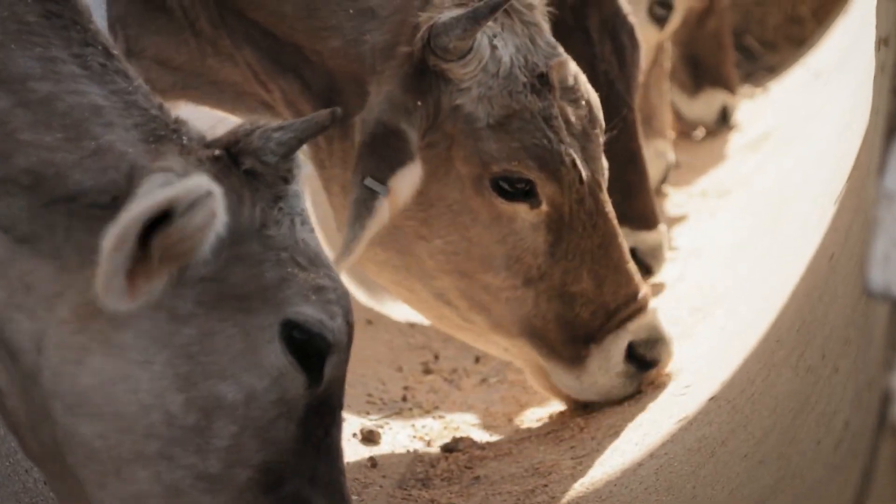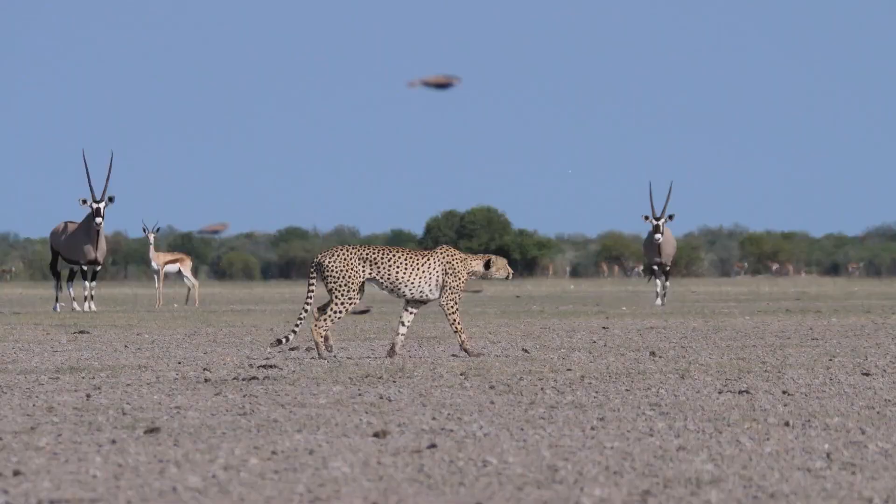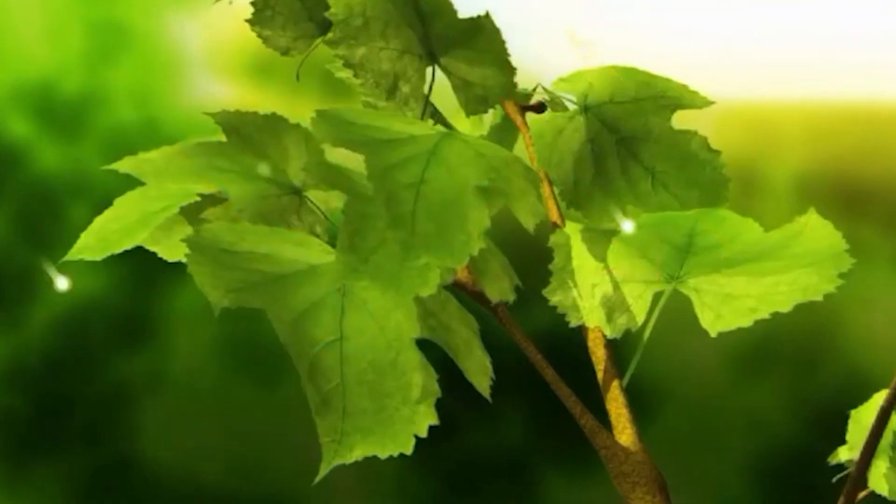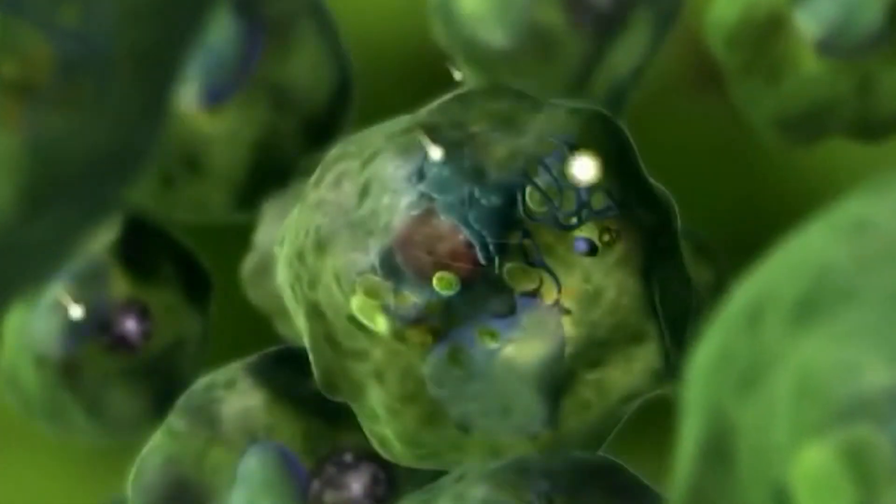While most living things rely on grazing, scavenging, or hunting for food, plants are able to make their own food through photosynthesis. The carbon-based molecules formed by this process are the foundations on which all the diversity of nature is founded.